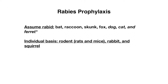Now let's talk about rabies prophylaxis. We assume bats, raccoons, skunks, foxes, dogs, cats, and ferrets are rabid. I put an asterisk here because dogs, cats, and ferrets can also be domesticated animals, and domesticated animals are typically vaccinated against rabies, so those situations would really need to be determined on a case-by-case basis.